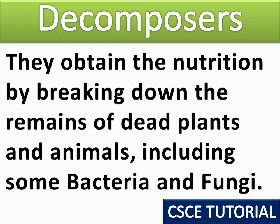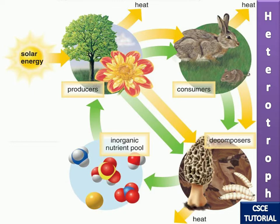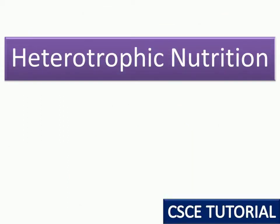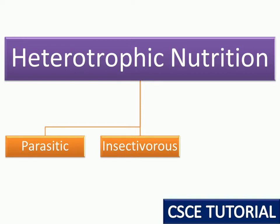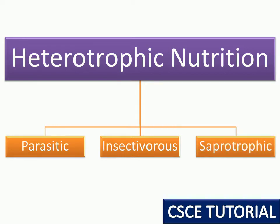Producers are green plants and trees. Consumers depend on producers for their food. Decomposers obtain their nutrition from dead and decaying matter. Heterotrophic nutrition is again divided into three categories: first is parasitic nutrition, second is insectivorous nutrition, and third is saprotrophic nutrition.